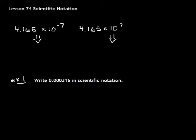Scientific Notation is a way to write really big numbers or really small numbers in a compact way. Here we have two numbers that are written in Scientific Notation. Scientific Notation is where you write the decimal point in between the first two non-zero numbers.